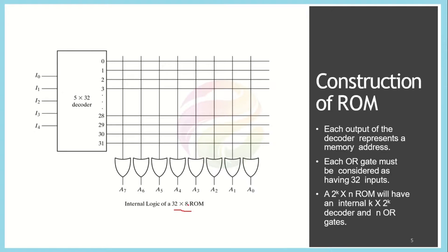For a 32 × 8 memory, to access 32 locations we need to have 5-bit address lines, represented from i0 to i4. For each combination of these 5 bits we select one row, and each row is then connected to the output. The outputs a0 to a7 represent the contents at any given location.